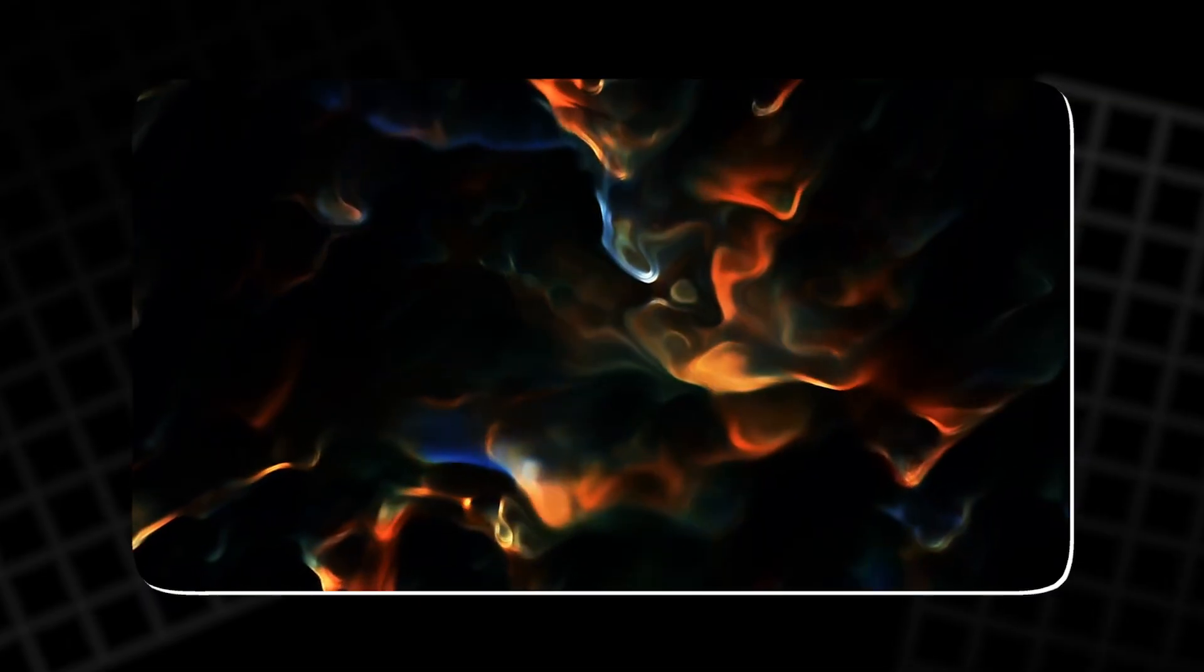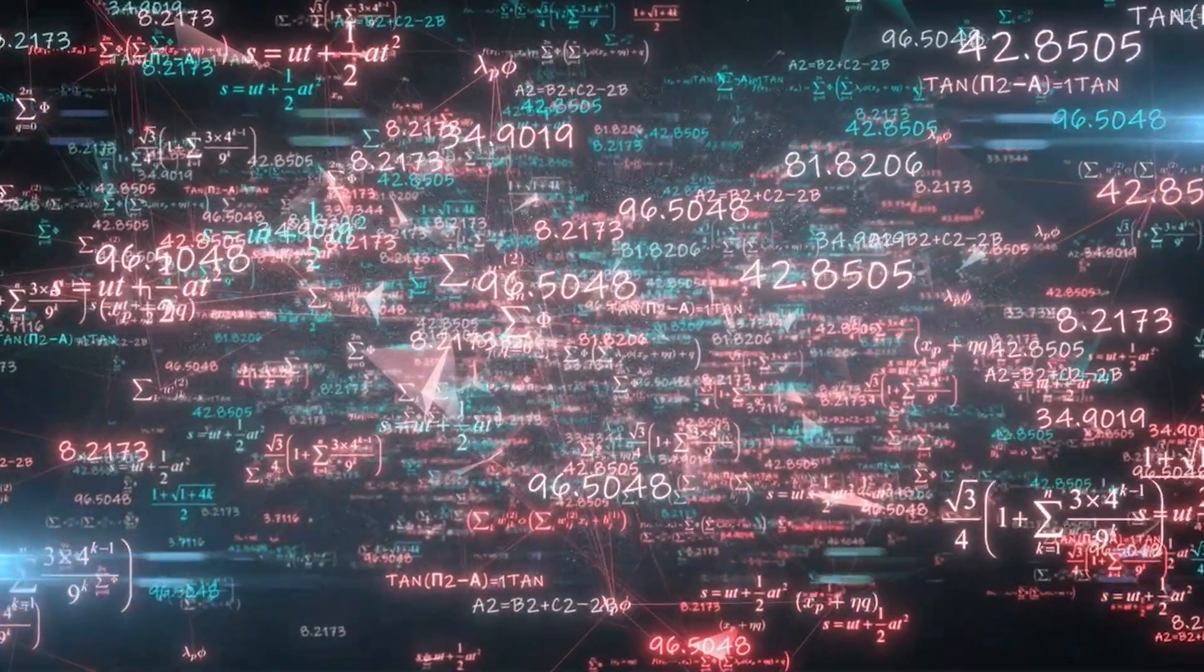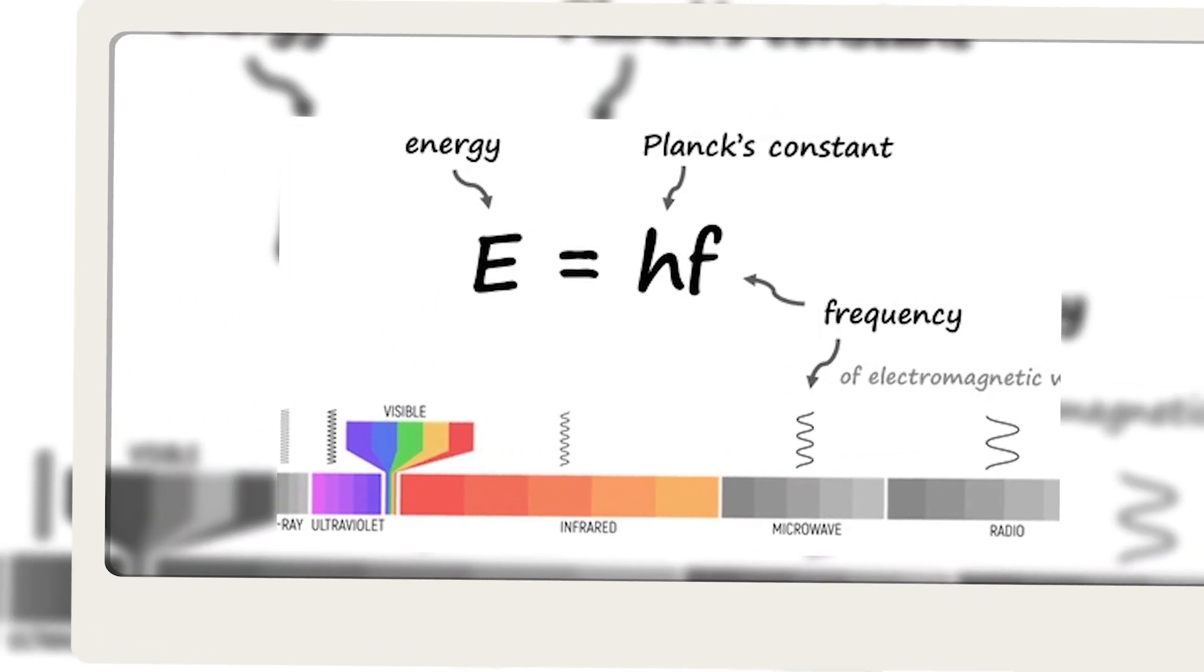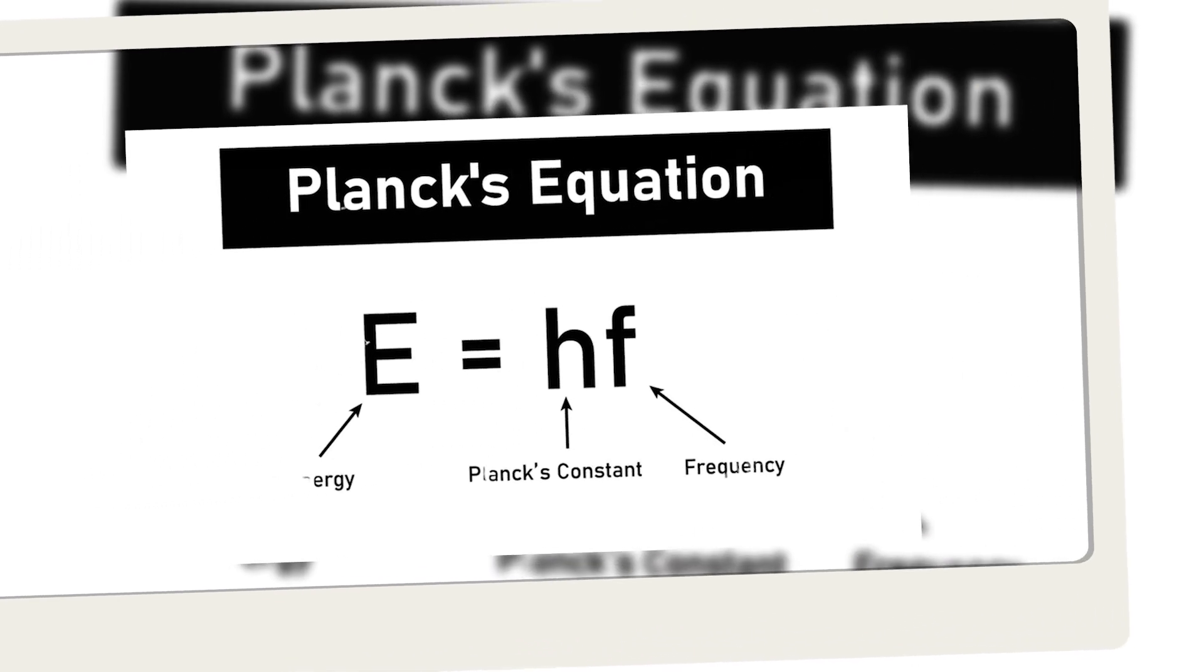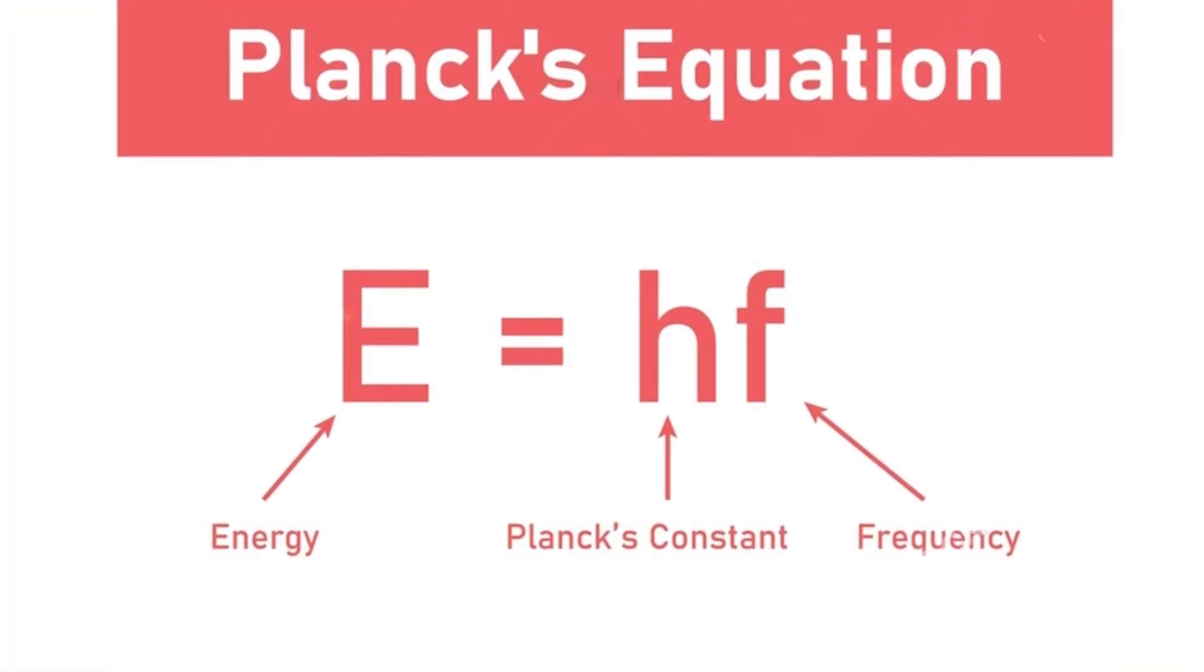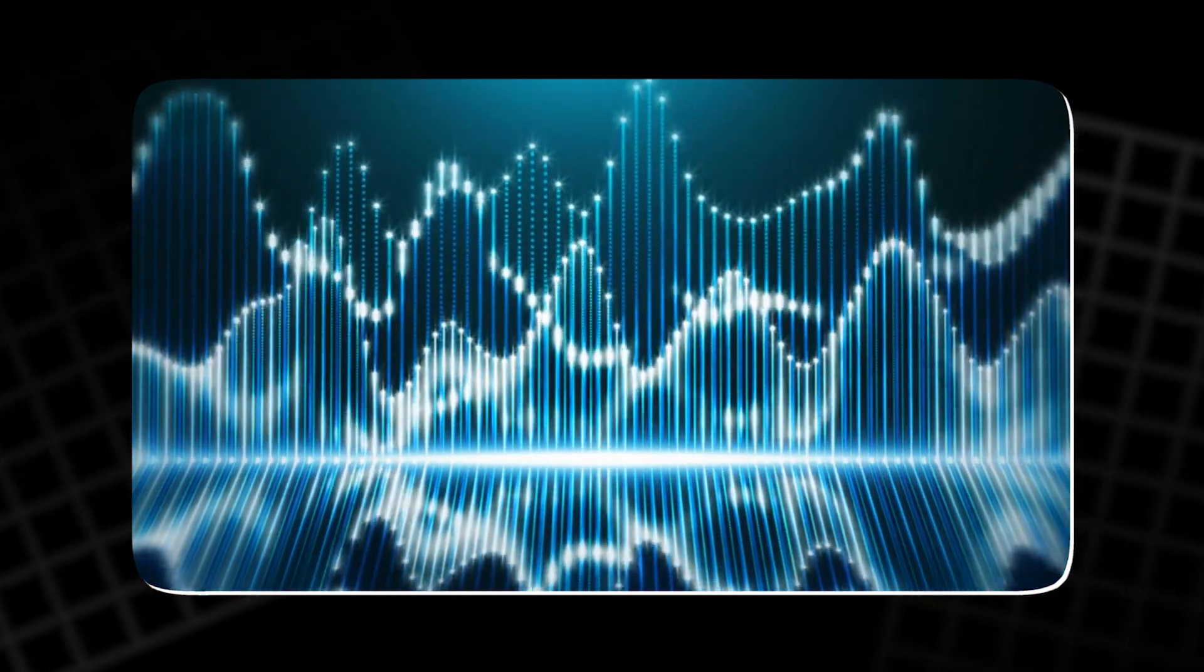Together, these gases create a palette of natural luminescence that no artist could replicate, each color defined by the immutable laws of quantum physics. The relationship between energy and color in this phenomenon can be described by the formula E equals hf, where E represents energy, H is Planck's constant, and F is the frequency of the emitted light. The higher the frequency, the greater the energy, and the shorter the wavelength.